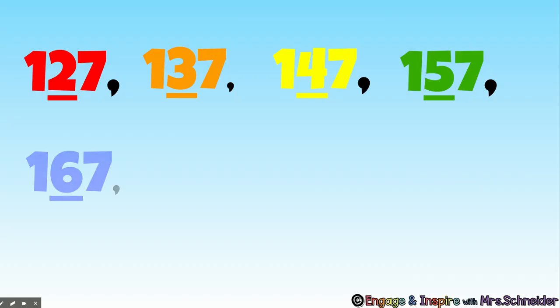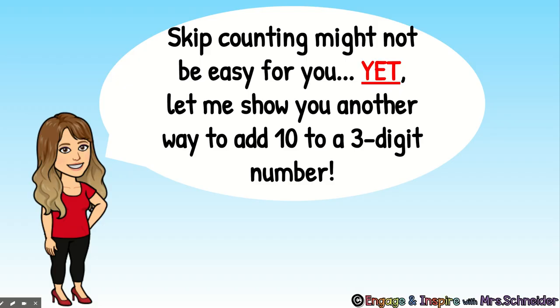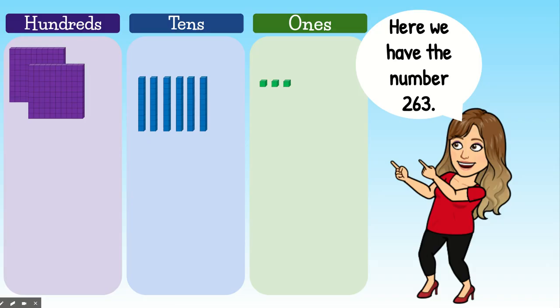147, 157, 167, 177, 187, 197. Okay. Well, skip counting might not be easy for you yet. I promise you're going to get it. But let me show you another way to add 10 to a three-digit number.